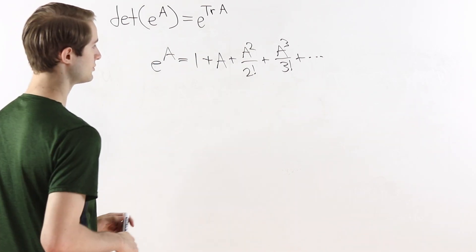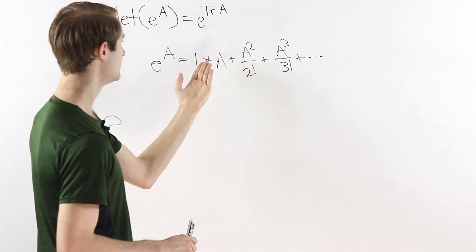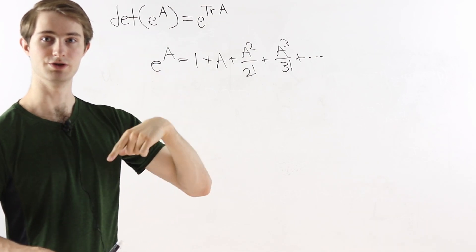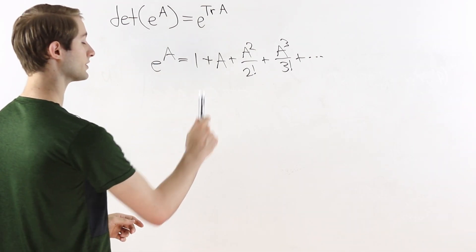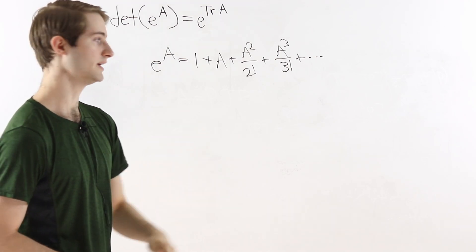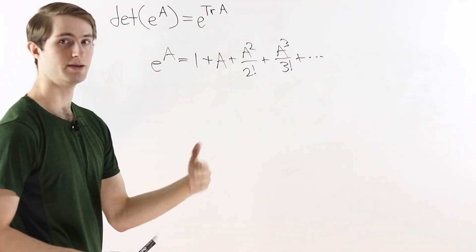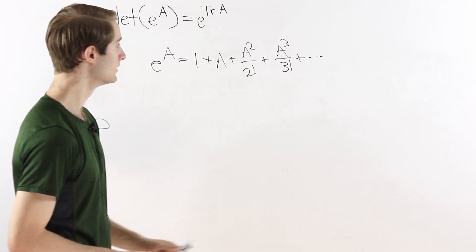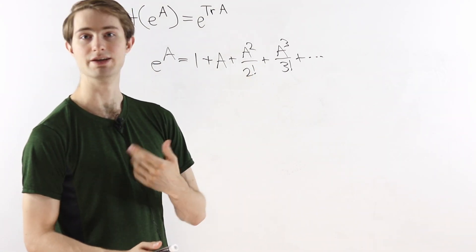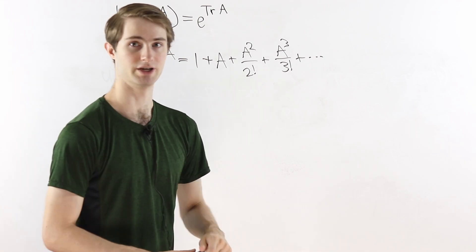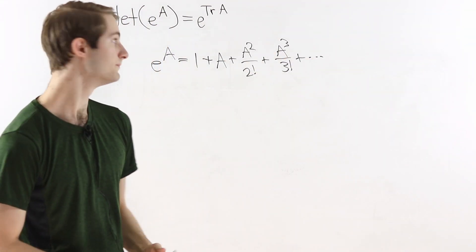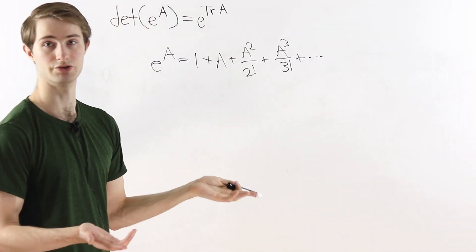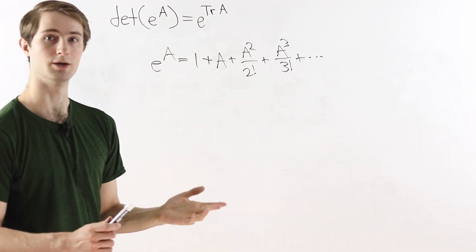Now assuming A is upper triangular, what do we know about A squared, A cubed, and so on? The product of two upper triangular matrices is also upper triangular. So A squared equals A times A, both upper triangular, hence upper triangular. A cubed equals A squared times A, again upper triangular. This holds for all terms in the sum, and the identity matrix is also upper triangular, so e to the A is a sum of upper triangular matrices — and is therefore upper triangular.